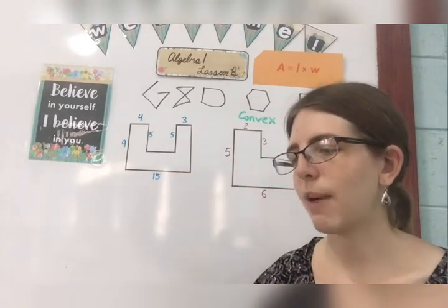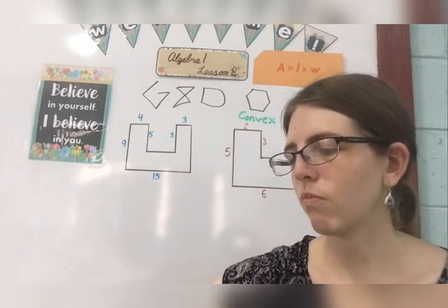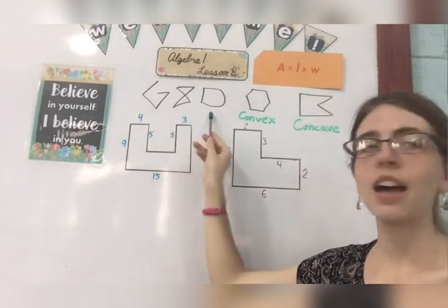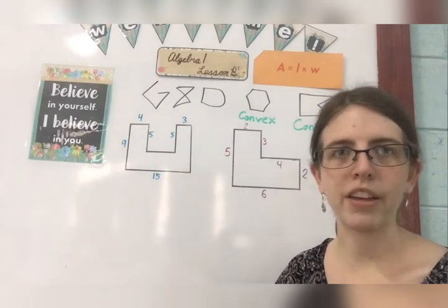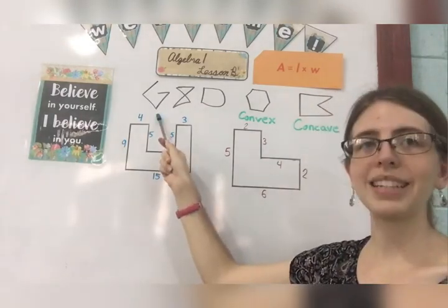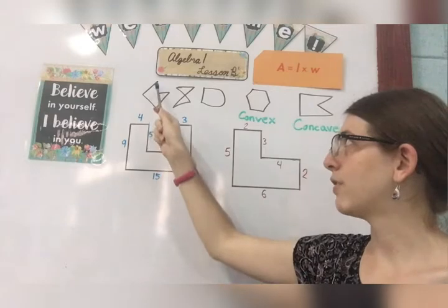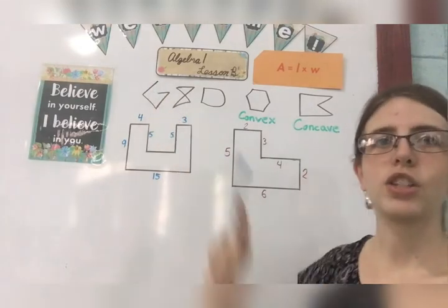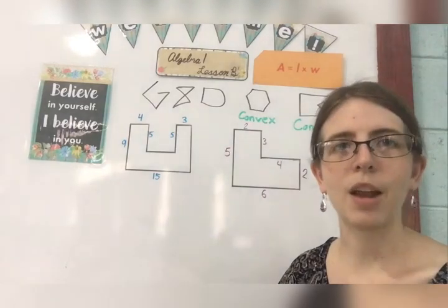Take a look at the shapes behind me on the board. Right here, these three shapes. None of them are polygons. This one here is not a polygon because it's not closed. It's flat. It's made up of line segments. But you have a space right here. So because it's not closed, it's not a polygon.